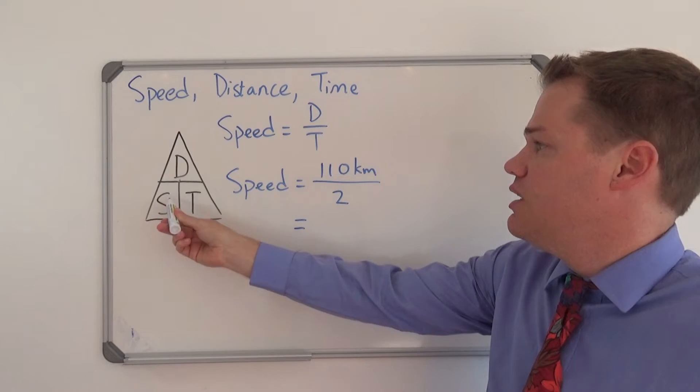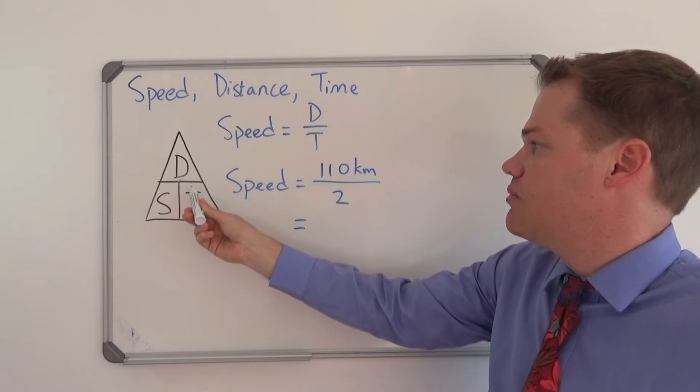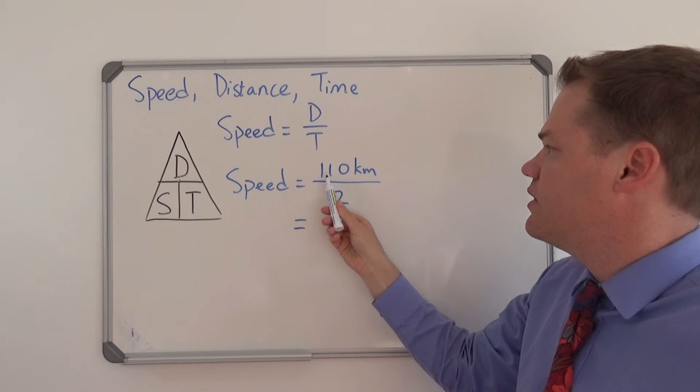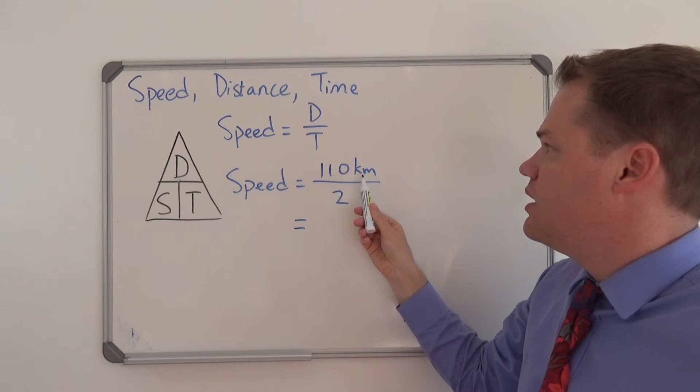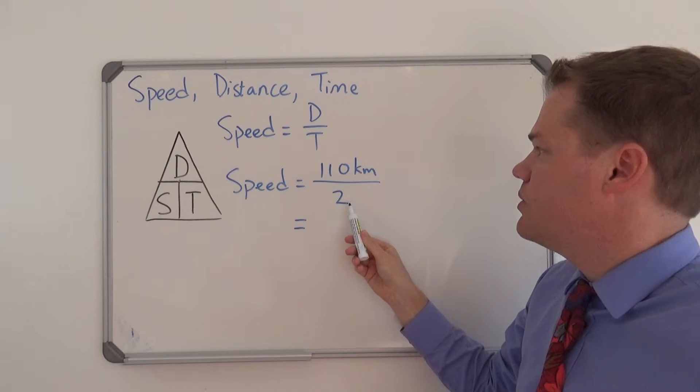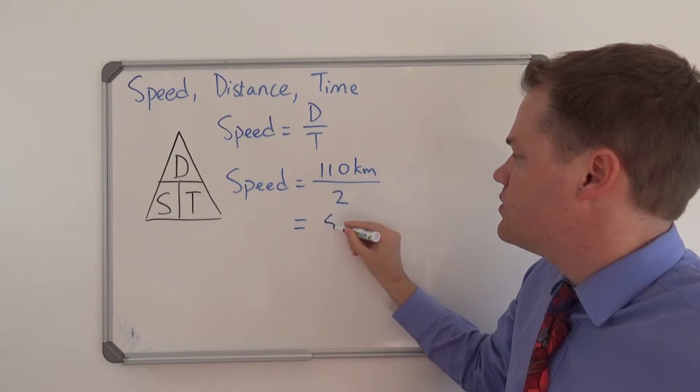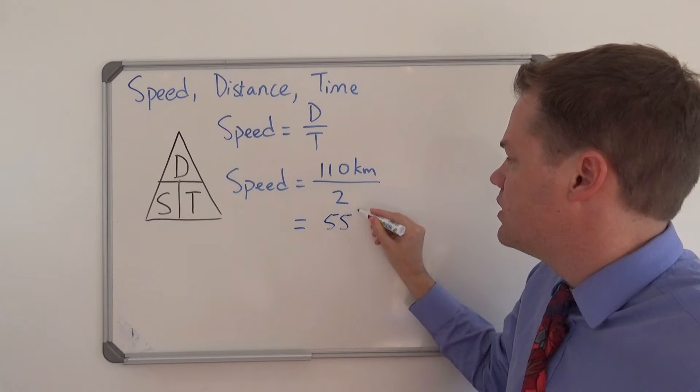We have the formula: speed equals distance divided by time. So we simply going to divide this distance by the amount of time, which is two hours, and the answer is 55 kilometers per hour.